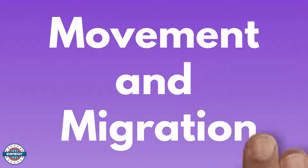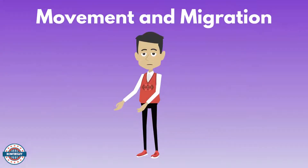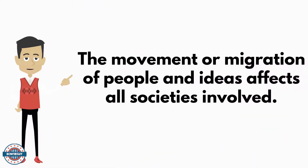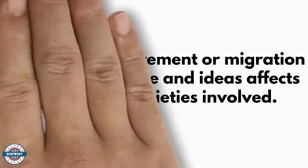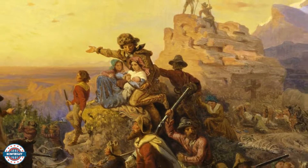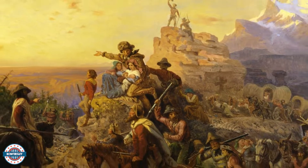The next connecting theme is movement and migration. The movement or migration of people and ideas affects all societies involved. Take another look at manifest destiny — Native Americans were not given the choice whether or not they had to relocate. They were forced to.